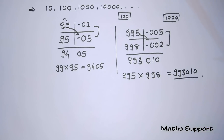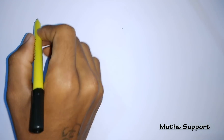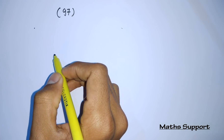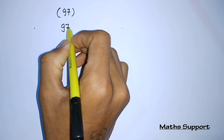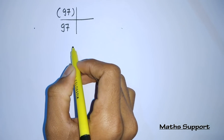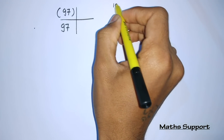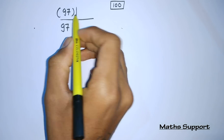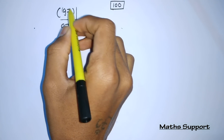Now think deeper — we can use this method for finding squares as well. Suppose you want to find the square of 97. A square means multiplying a number by itself, so we are multiplying 97 by 97. This number is nearer to 100, so the base is 100.